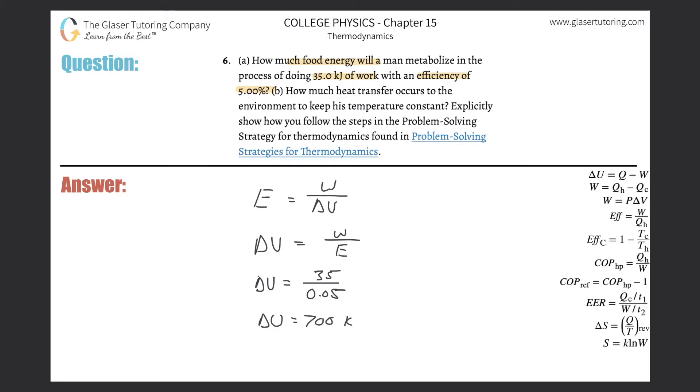So about 700 kilojoules of food energy will need to be metabolized. You can, if you like, convert that into kilocalories. You would basically take this value, multiply it by about 4.184, and that would give you your food calorie value. In any case, that takes care of letter A. Now letter B.